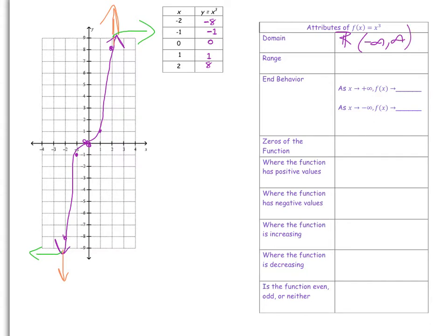Now let's look at the range. Range represents the vertical distance. As you can see, the graph is going infinitely in a negative direction and infinitely in a positive direction. So the range for all cubic functions is all real numbers, or negative infinity to positive infinity.